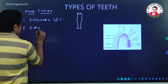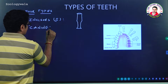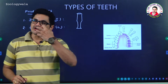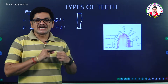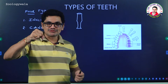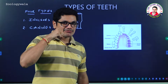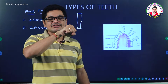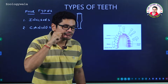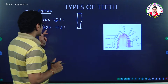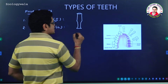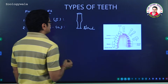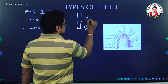The second type is canines, spelled C-A-N-I-N-E-S, represented with 'C'. Canines are useful for tearing the food material and shredding the food material. For example, if you put a non-veg leg piece here, you will tear the food material using the canines. So canines are useful for tearing or shredding — S-H-R-E-D — the food material.